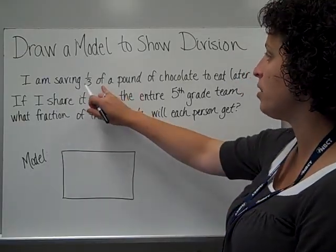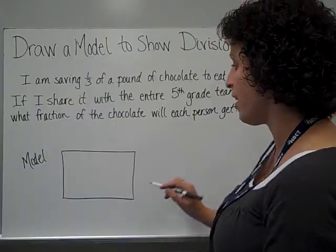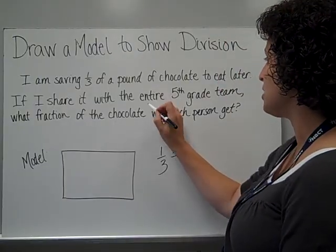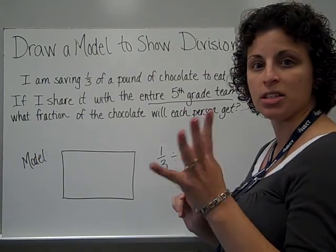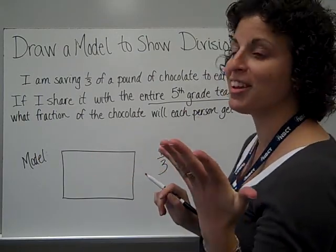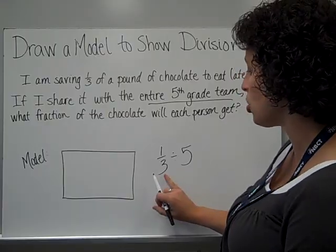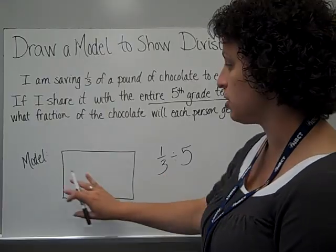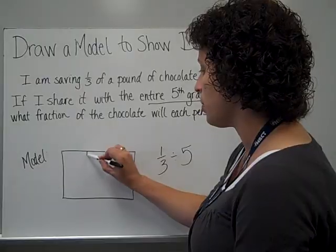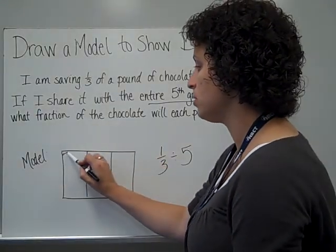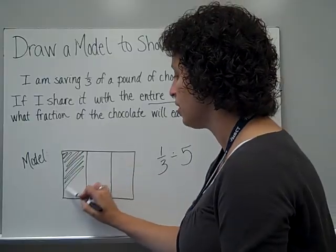So I have 1 third of a pound. I need to show that first. So my problem is going to be 1 third divided by the entire 5th grade team. That's the 4 teachers and Mrs. Plough. She likes chocolate too. So I'm going to divide by 5. So I need to show this 1 third first. Here's my model. I'm going to start by cutting it into thirds and shading 1 of those since I only had 1 third of a pound.